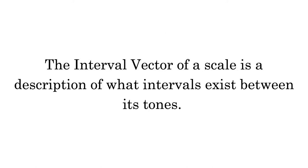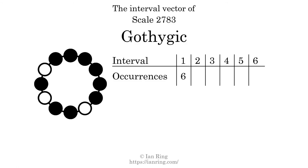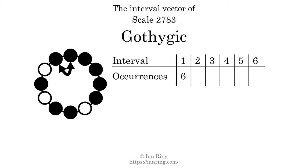The interval vector of a scale is a description of what intervals exist between its tones. There are 6 intervals with the size of 1 semitone, at positions here, here, here, here, here, here, and here.